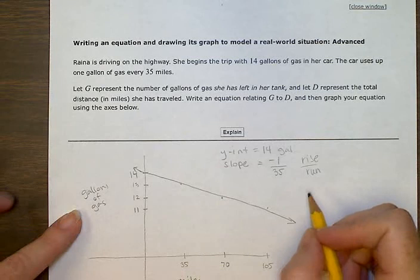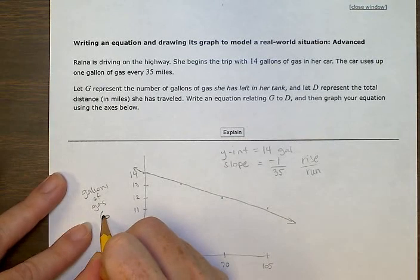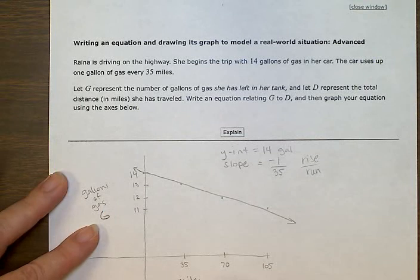So, this is our g, right? G was the number of gallons of gas. And D was the distance in miles.